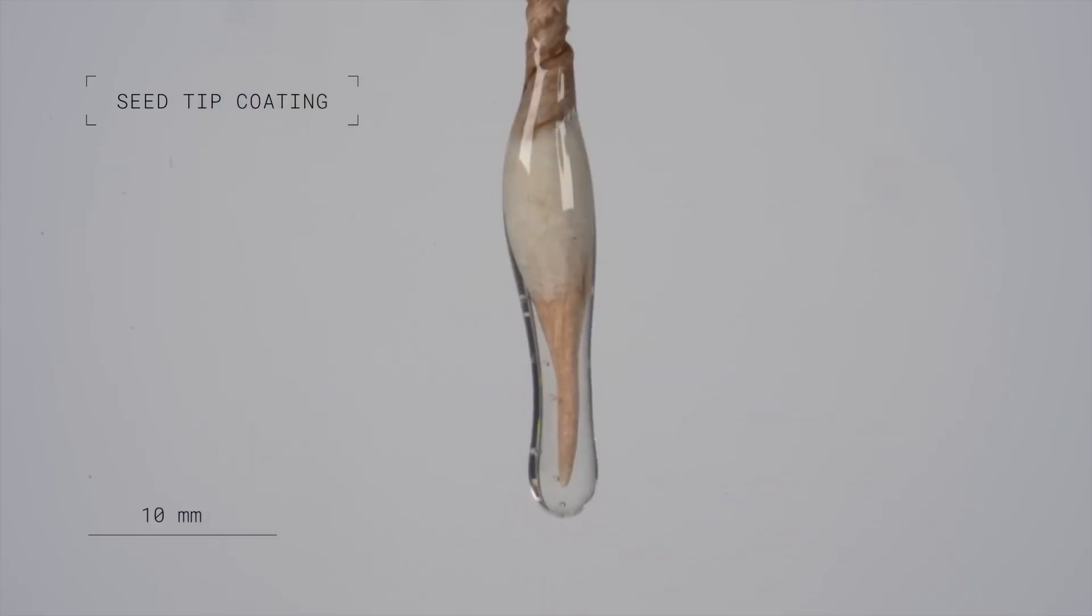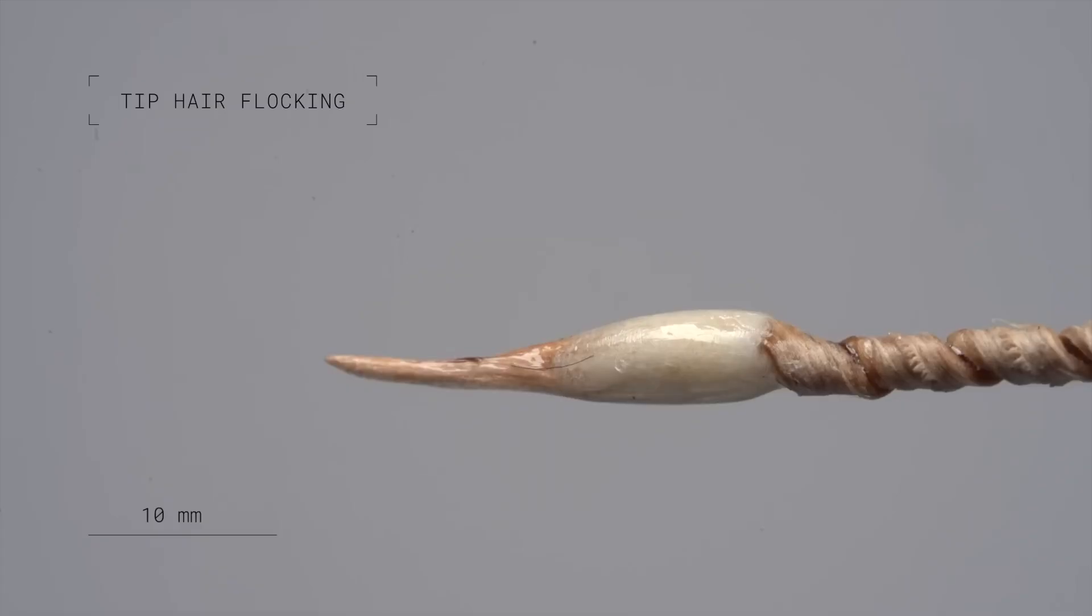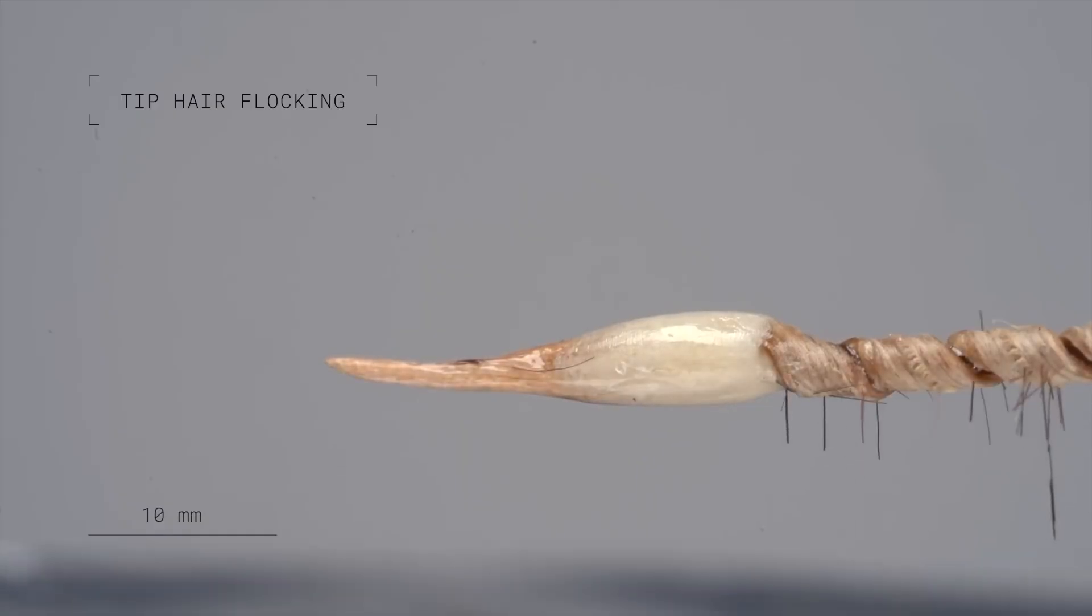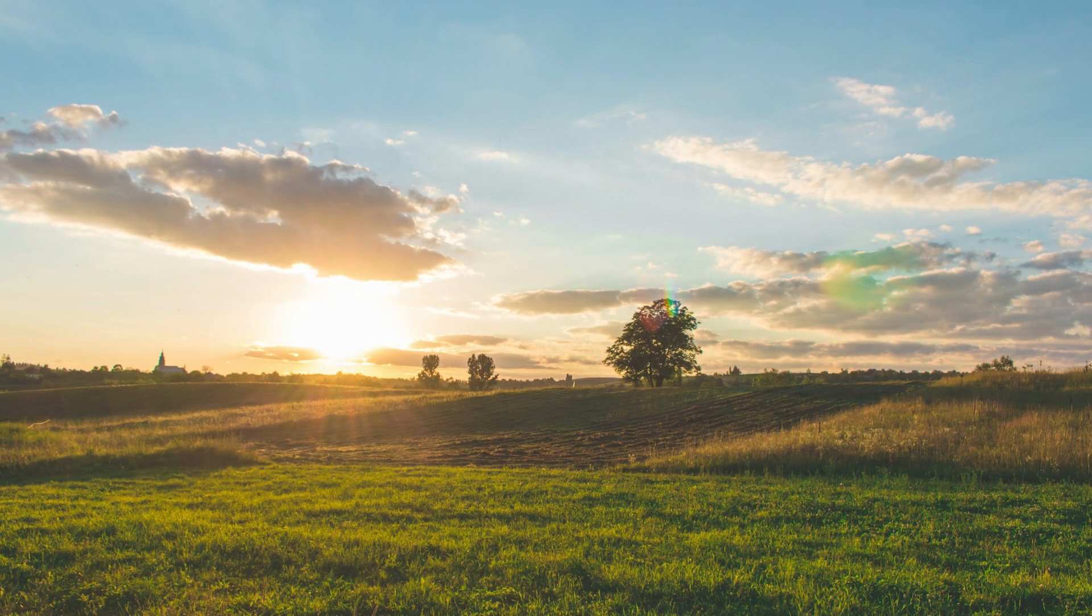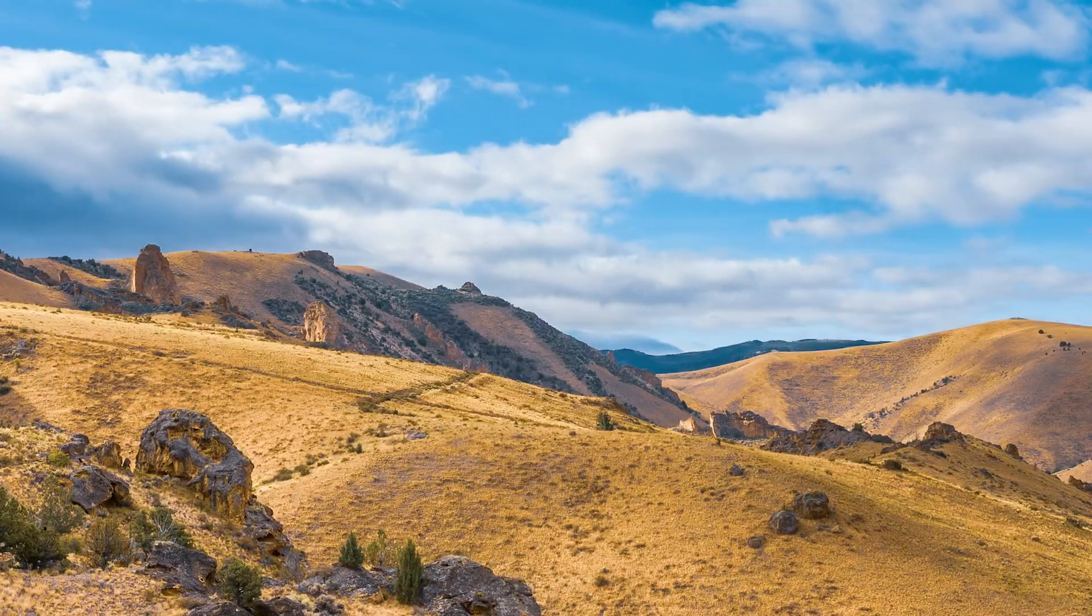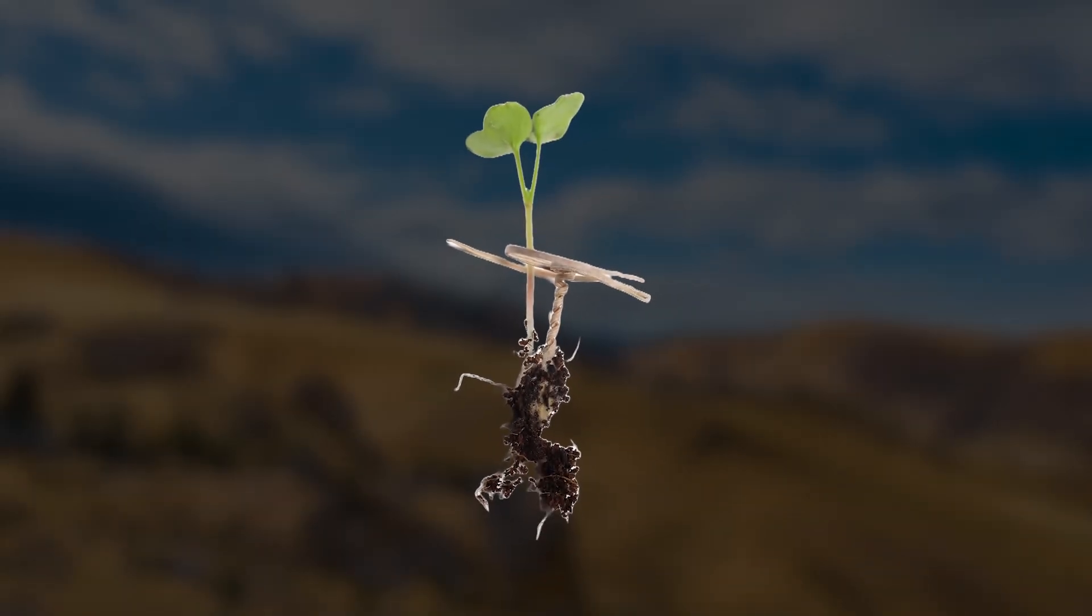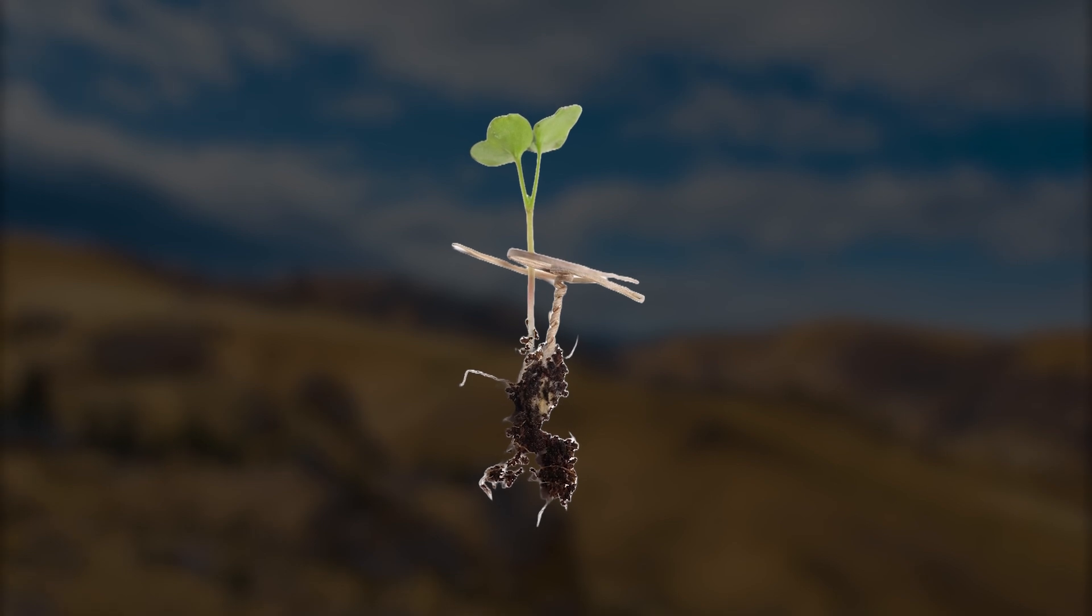What's truly exciting is the robot's versatility. It can hold and plant a variety of seed types, making it adaptable to different terrains and environments. Whether it's grasslands, forests, or mountains, this technology can assist in reforesting the planet's most challenging areas.